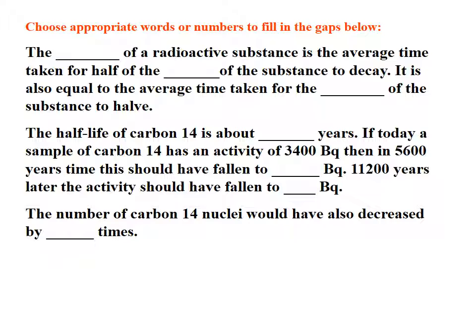So just to finish up here, the half-life of a radioactive substance is the average time taken for half of the nuclei of the substance to decay. It's also equal to the average time taken for the activity of the substance to halve. The half-life of carbon-14 is about 5,600 years. If today a sample of carbon-14 has an activity of 3,400 Becquerels, then in 5,600 years' time, it should have fallen to 1,700 Becquerels, 11,200 years later, the activity should have fallen to 425, and the number of carbon-14 nuclei would have also decreased by 8 times.